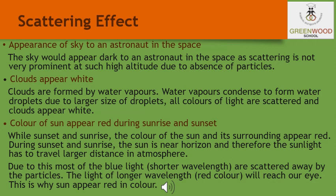Why do clouds appear white? Clouds are formed by water vapors. Water vapor condenses to form water droplets. Due to the larger size of the droplets, all the colors of light are scattered and the clouds appear white. Why does the color of the sun appear red during sunrise and sunset? During sunrise and sunset, the sun is near the horizon and therefore sunlight has to travel a larger distance in the atmosphere. Due to this, most of the blue light — the shorter wavelength — is scattered away by the particles, and the red light, which has the longer wavelength, reaches our eyes. This is why the sun appears red in color.